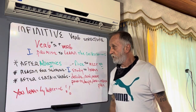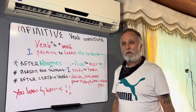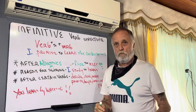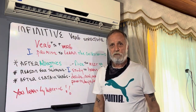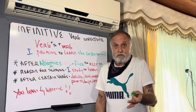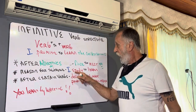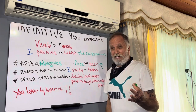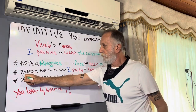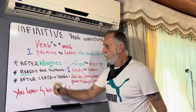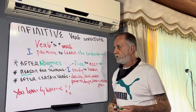The second secret is we use infinitive structures for the reason — why are you saying what you're saying? What's the reason for the sentence? Example: I study. Why? To learn. The reason. The reason for studying. Infinitive structures after descriptive words.